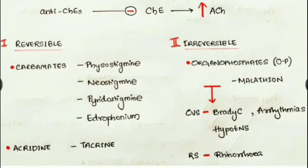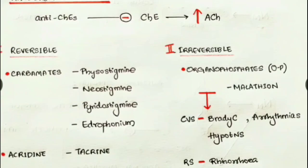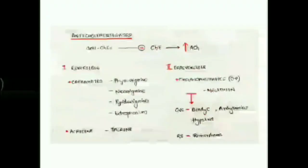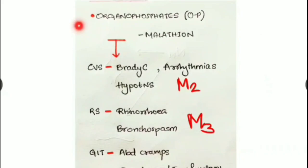The irreversible type includes organophosphates, with malathion (an insecticide) as an example. Once malathion binds to the cholinesterase enzyme, it is irreversible and permanent, resulting in high levels of acetylcholine concentration, which causes severe effects.